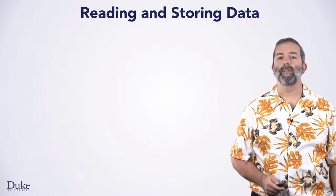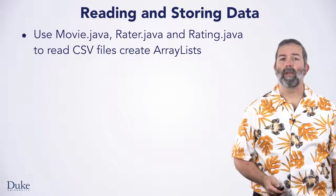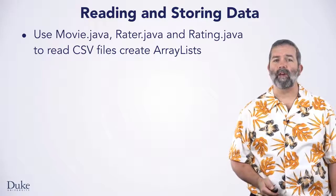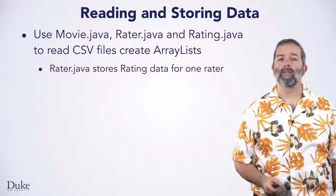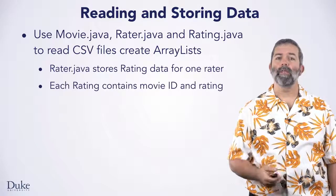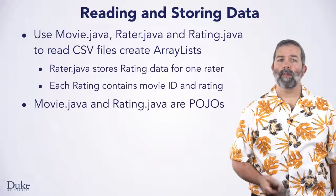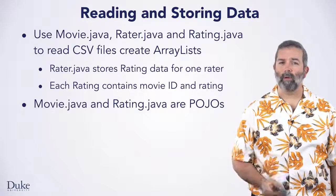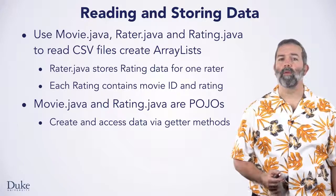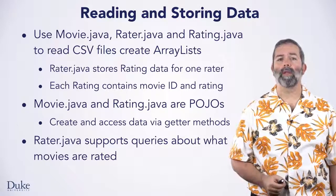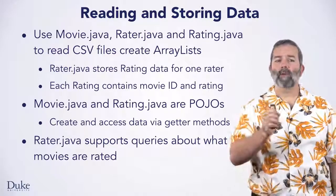Let's summarize the three classes you'll be using to read and store data to create recommendations. You'll use movie.java, rater.java, and rating.java in creating programmatic recommendations by reading CSV files and storing data in array lists in this first part of the Capstone project. The rater.java class stores movie ratings for one rater — this might be ratings for several movies. Each rating object stores the movie ID and the rating for that movie in an instance of the rating.java class. This makes both movie.java and rating.java POJO classes, each with a constructor and get methods. The rater.java class supports queries about ratings made by one rater, like what movies have been rated and what the rating for a specific movie is.